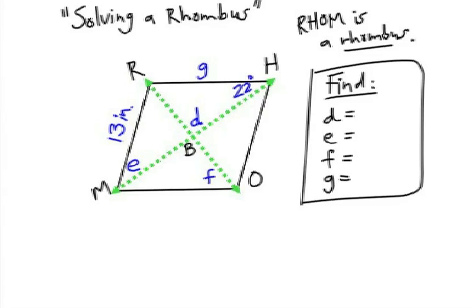Let's remember about a rhombus. What do we know? A rhombus is a parallelogram. Opposite sides are congruent. The diagonals bisect each other and are perpendicular to each other.